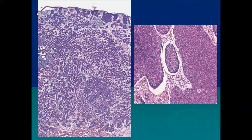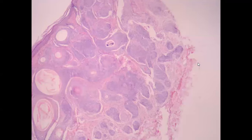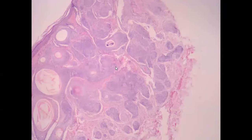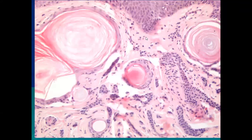Basaloid cells infiltrating the dermis in small nodules indicate micro-invasive or micronodular basal cell carcinoma; larger nodules indicate nodular BCC. Basaloid cells with keratin pearl formation, no epidermal connection, and no retraction artifact are features of trichoepithelioma. Desmoplastic trichoepithelioma additionally shows a dense connective tissue network around the basaloid cells and keratin pearls.